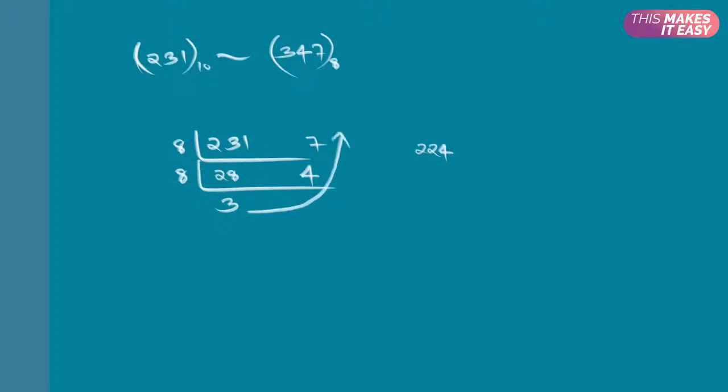The remainders are 3, 4, 7. We write it from bottom to top. The octal version of 231 is 347. We can cross check it.